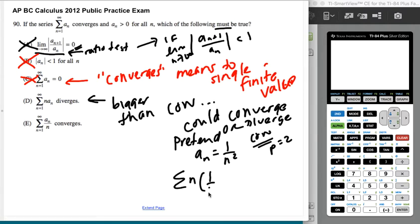Well, n times one over n squared. Well, that would diverge, because that would be one over n and that would diverge.